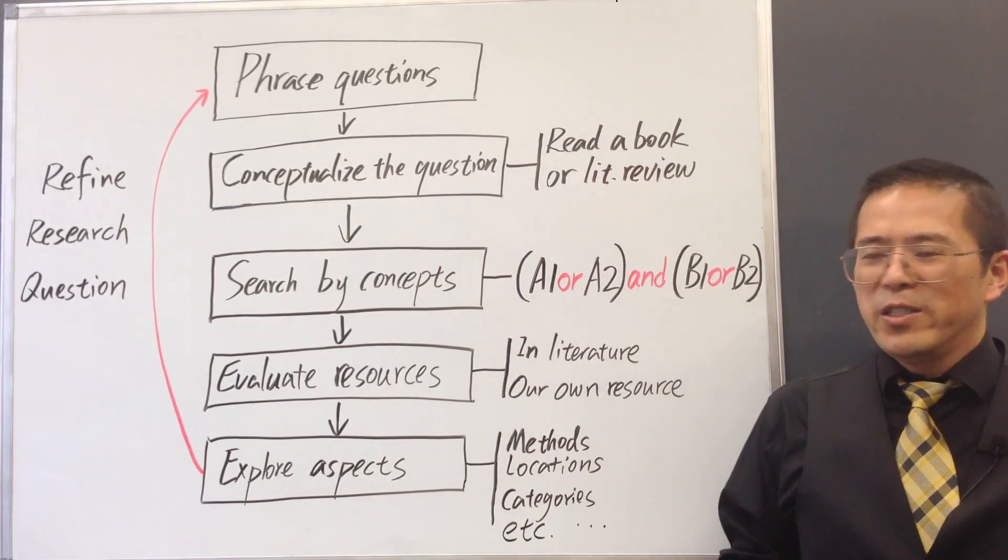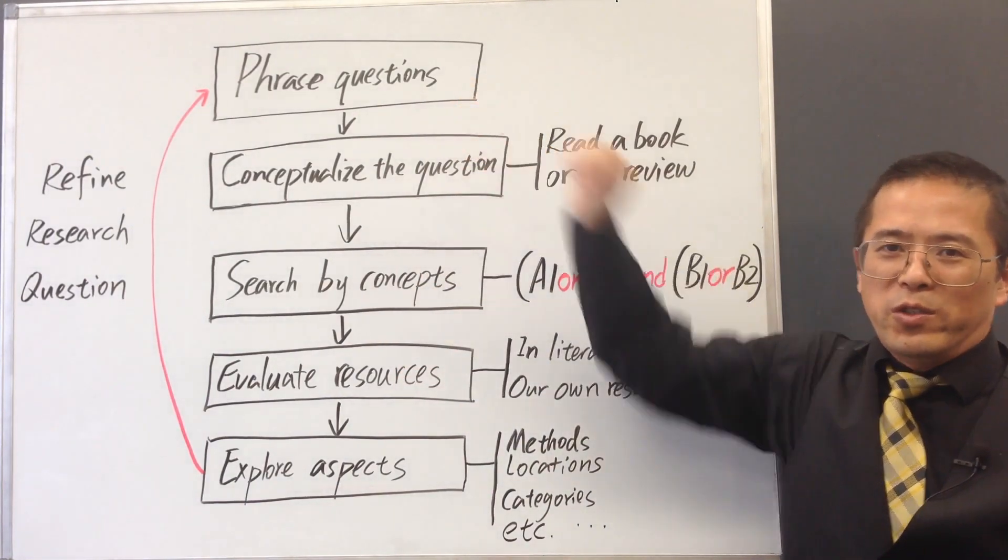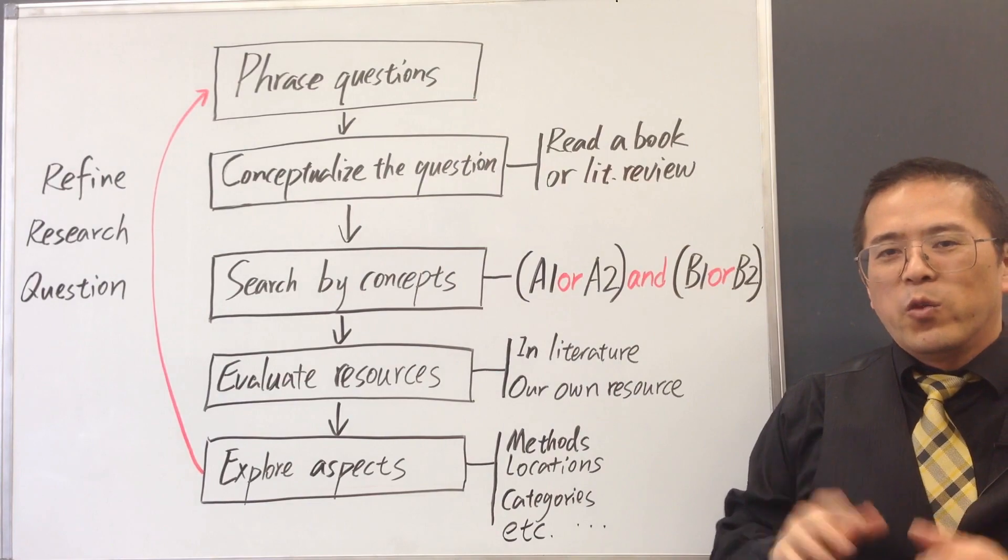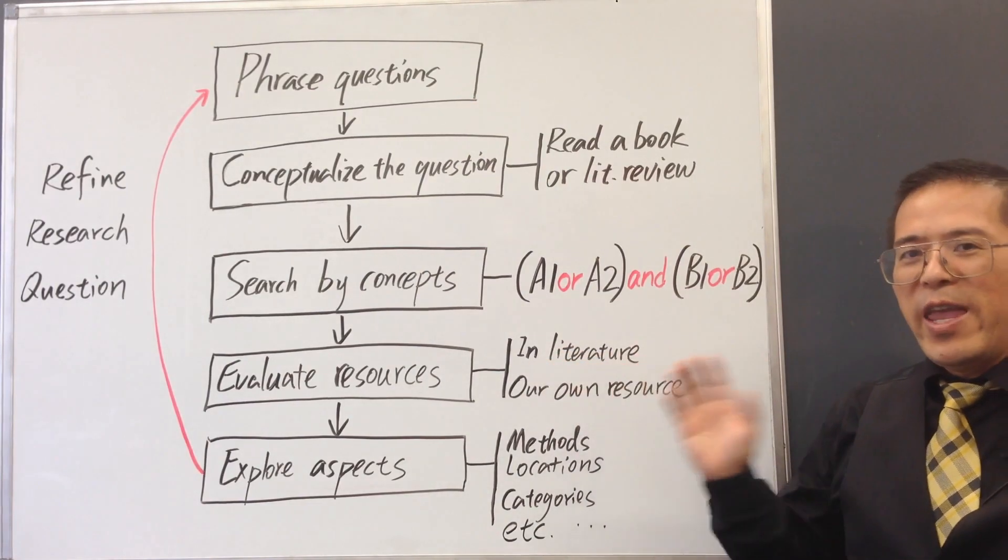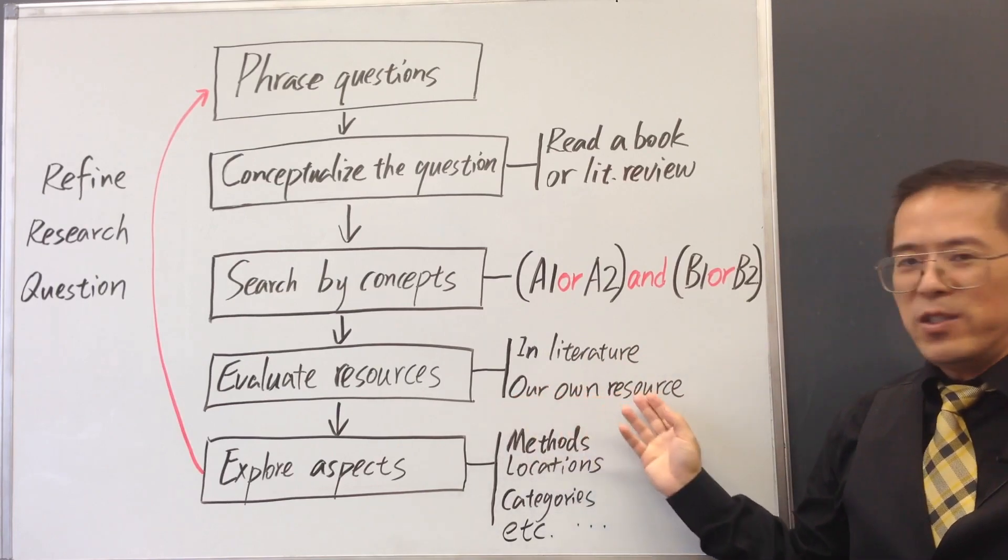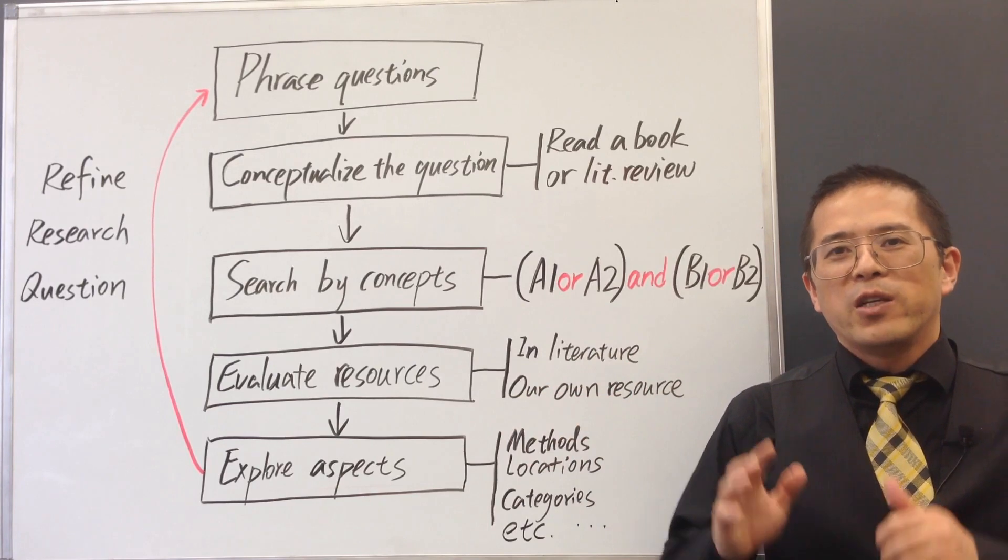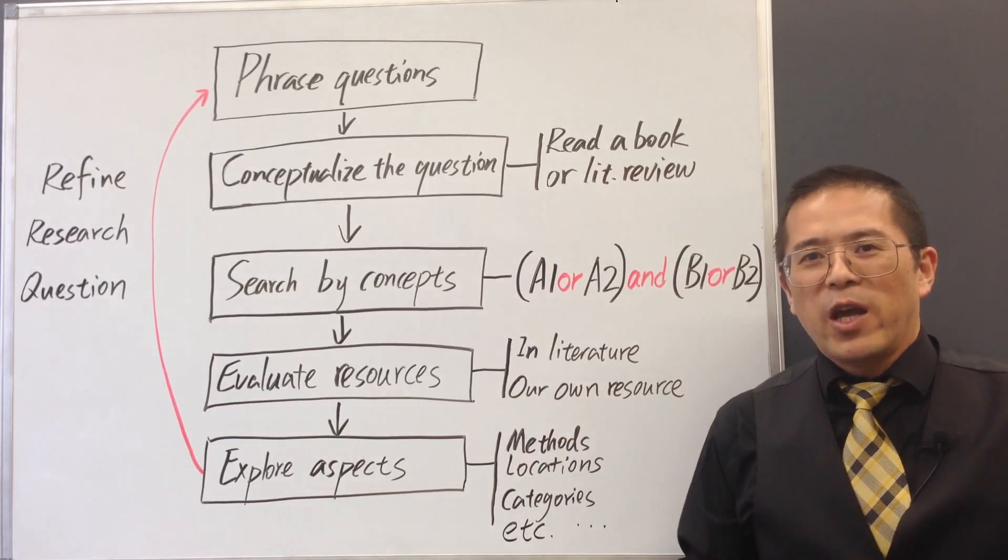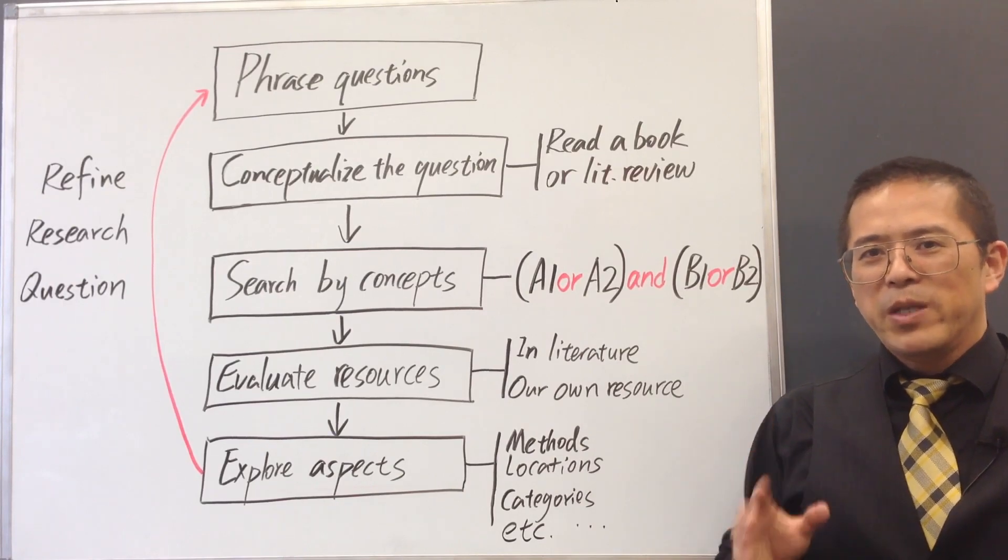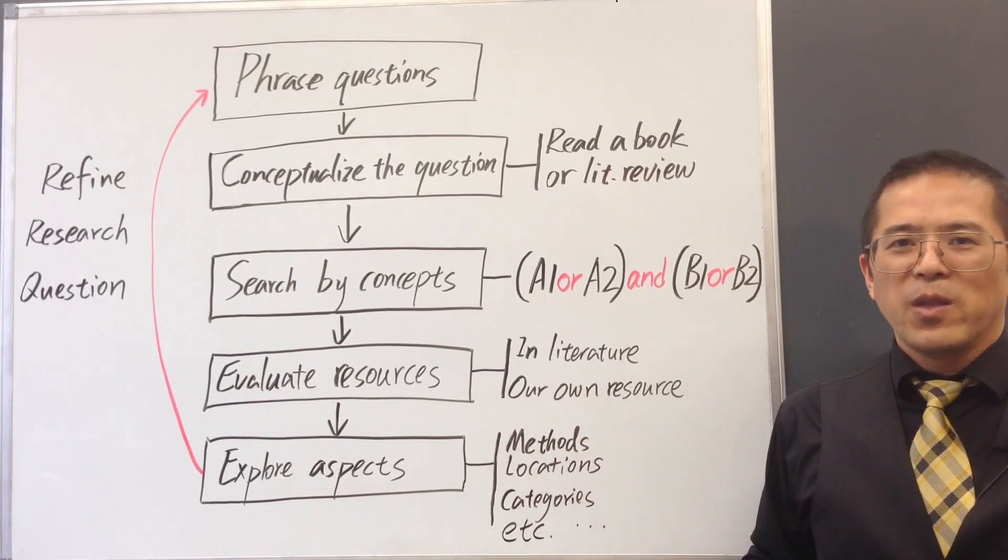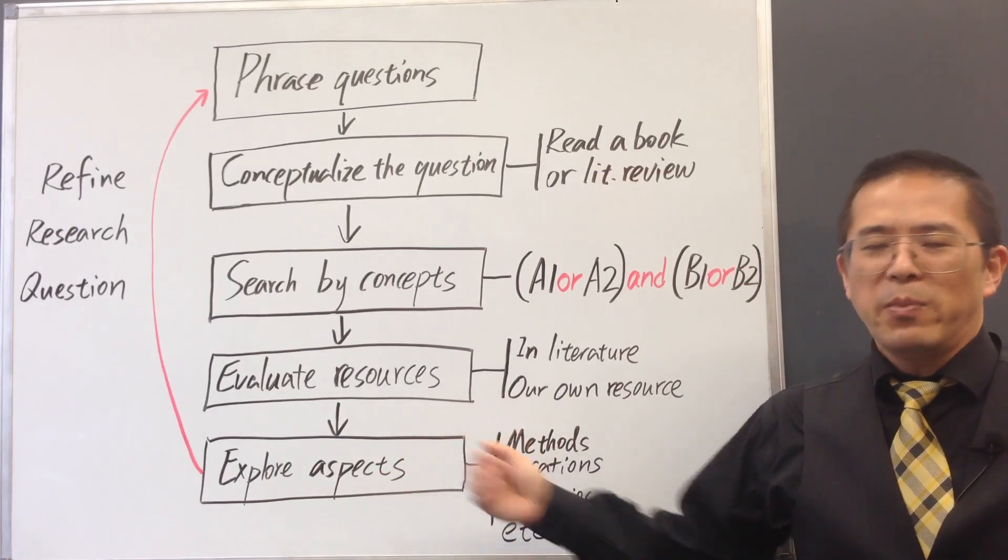We want to evaluate the available resources for our formulated research questions. We want to evaluate both the resources in the literature and our own resources that can be dedicated to this research to determine whether we should further narrow down our topic. At this stage, based on the search results, we may be able to identify several aspects of the research topic.